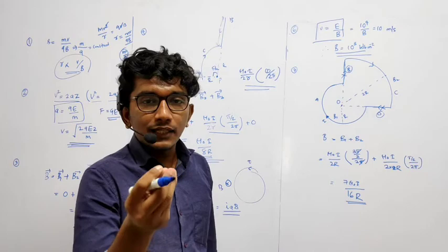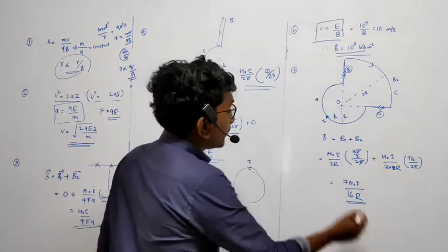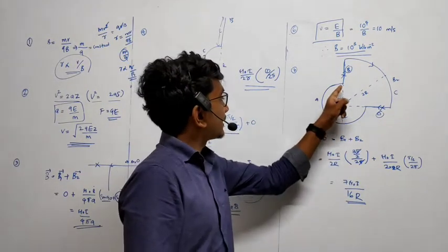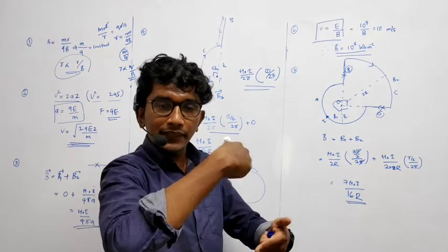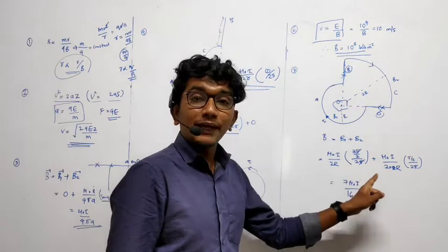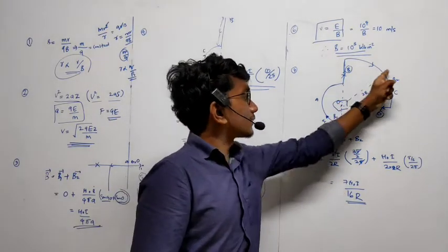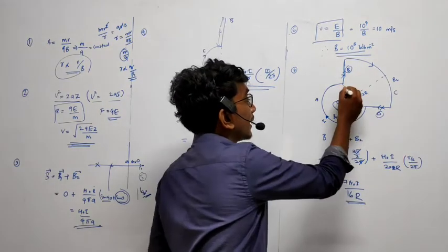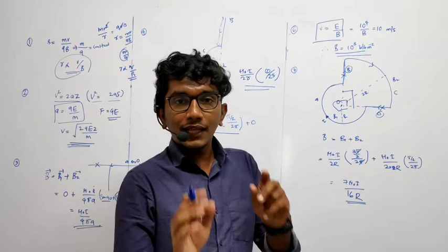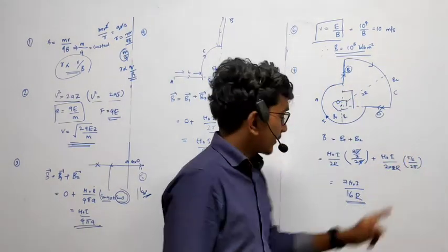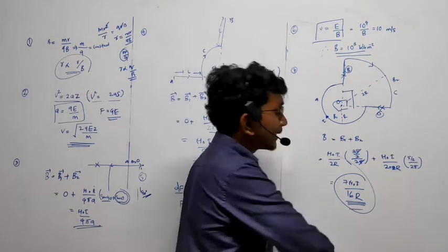That is this equation. Don't forget this one. You can use here. So it will be mu0 I divided by 2R into theta by 2pi. What is the theta here? Not this theta. You have to consider this theta. The other one. The big one. The circle is big, so theta should be big. So that is equal to 3 pi by 2 divided by 2pi. Plus mu0 I divided by 2 into, look at this, don't get confused. Here 2R is the radius. 2 into 2R into, what is the angle here? Here is, you have to take pi by 2. So don't take 3 pi by 2. This is, the circle is big but angle is small. So pi by 2 divided by 2pi. That is equal to 1 by 4. Then add both of them. Then you will get mu0 I divided by 16R times 7. 7 mu0 I divided by 16R.